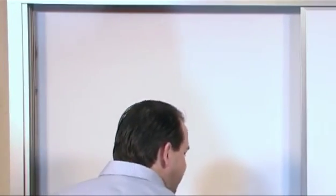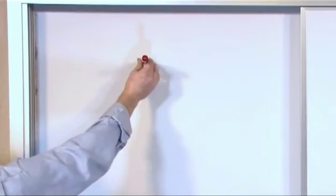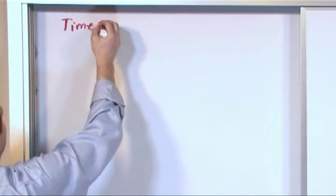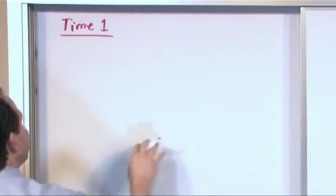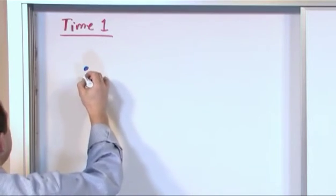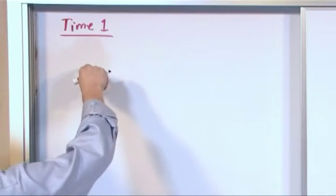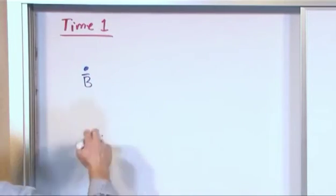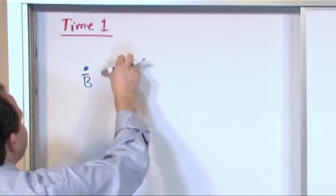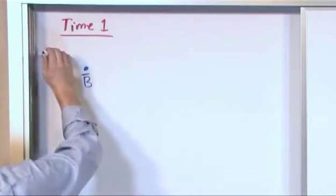Let's pretend that we have a magnetic field coming out of the board — coming from me to you, towards you. We're going to label some instant in time as time one, because I'm going to draw a few snapshots in time to show you that what I'm saying is true. I'm going to represent the field as a dot with a B vector under it. This dot means there's a magnetic field coming towards you. Of course, if you see an X in a book, that means the magnetic field is going away from you. There may be many magnetic field lines all around, but I'm only drawing one for clarity.